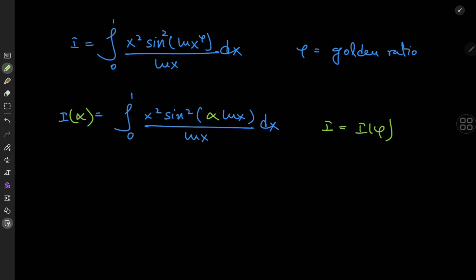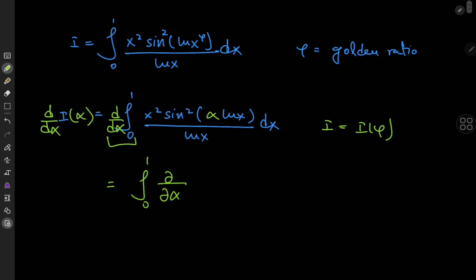Okay cool so what exactly does i of phi evaluate out to? So for that we differentiate with respect to alpha, and after switching up the integration and differentiation operators we have the integral from 0 to 1 of the partial derivative now with respect to alpha of x squared times the squared sine of alpha log x divided by log x dx.